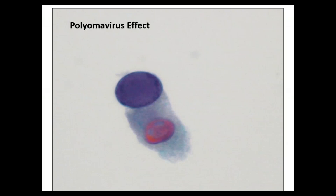Polyomavirus effect (the 'decoy cell') shows a single cell with eccentrically located nucleus, very clear nuclear contours without much irregularity, and a ground glass appearance. With microfocus adjustment, you can see a spiderweb-like pattern within the nucleus. Although they could be hyperchromatic, you typically do not see nuclear membrane or contour irregularity. The term 'decoy cell' was coined by Mr. Ritchie, Dr. Koss's cytotechnologist, because these can be mistaken for high-grade urothelial carcinoma.